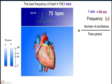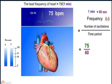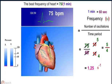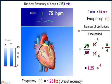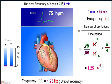equals the number of oscillations per unit time period, that is 75 by 60. On solving, we get 5 by 4, that is 1.25 second inverse. Hence frequency ν equals 1.25 hertz.